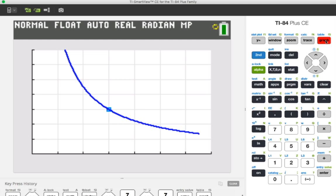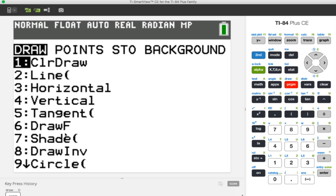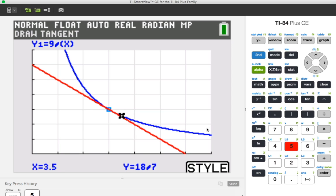All right, and then here we have a closer look at what's going on. And let's use another function. Let's go to second and then draw. And we're gonna let the calculator figure out what the tangent is, so we want to press the number five. Let's go ahead to style. We press the graph key so that we can get to style.